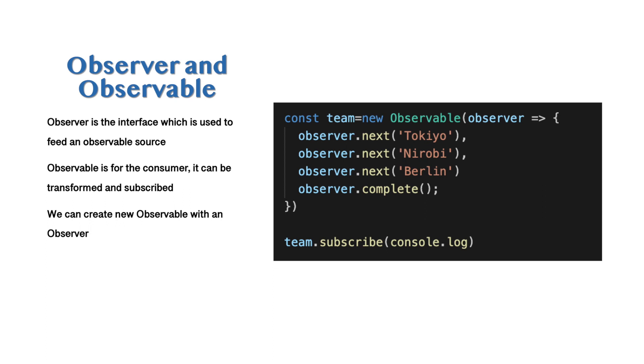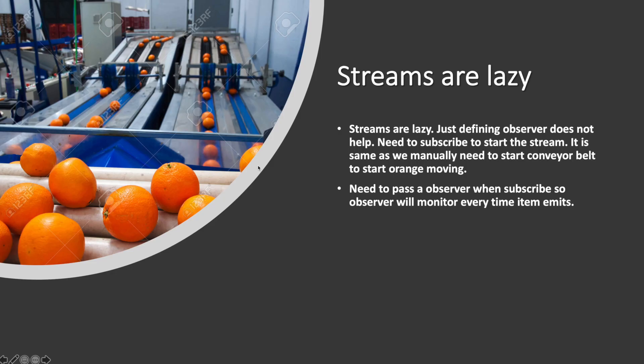We can create a new observable with an observer. In the code sample here, 'team' is a new Observable — you pass the observer, call observer.next() multiple times, then observer.complete(). Keep in mind this will not emit any data until you subscribe — streams are lazy. Just defining the observable is not enough; you need to subscribe in order to emit data, and you need to pass an observer when you subscribe.